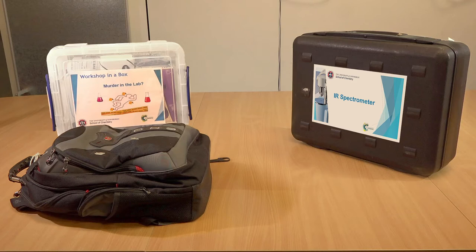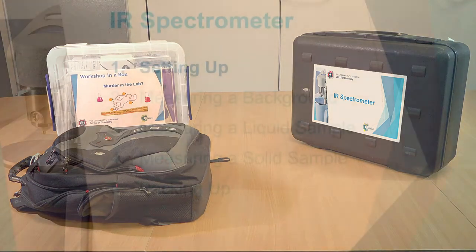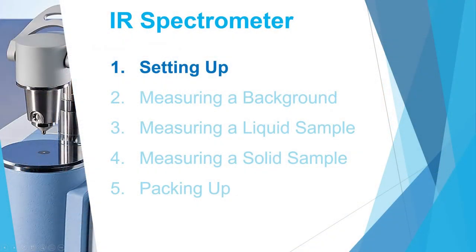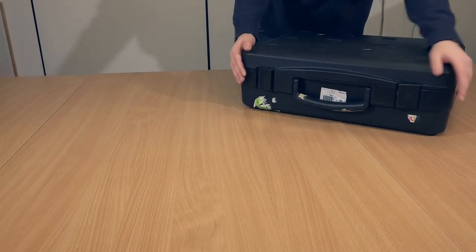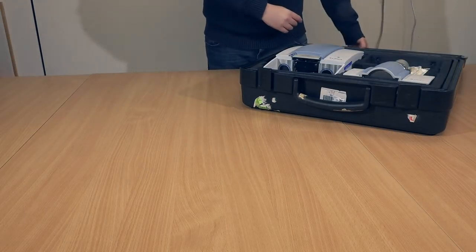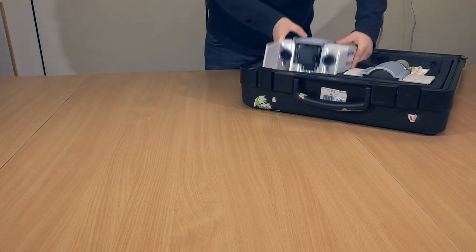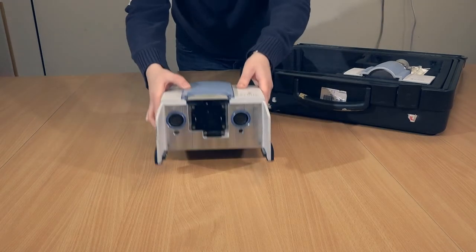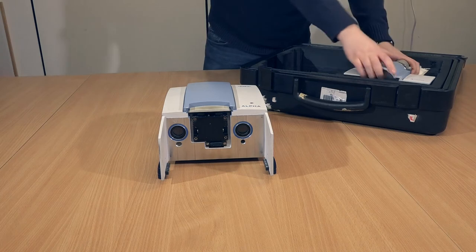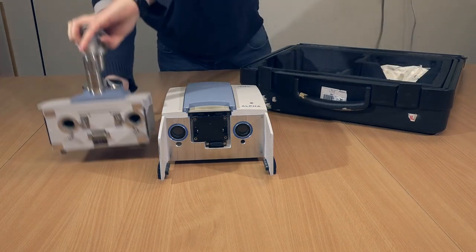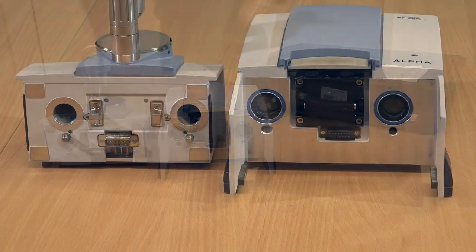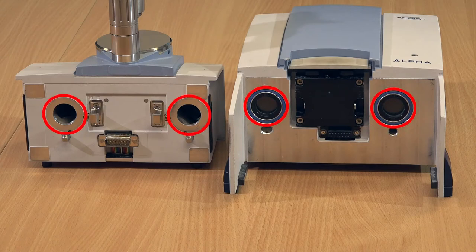Release the clasps as shown here to open the IR spectrometer suitcase. The spectrometer is in two parts. Remove each of them carefully - they are surprisingly heavy. Make sure not to touch the round windows or apertures in each of the two units.